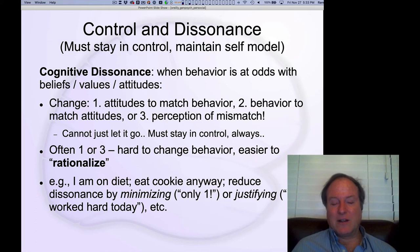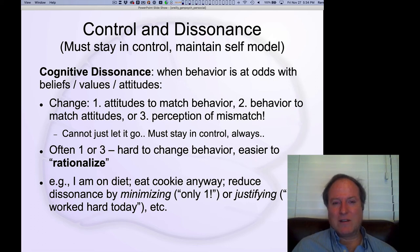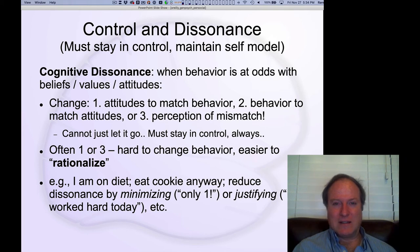For example, you eat a cookie even though you're on a diet, and you minimize the discrepancy by saying, 'I just had one cookie, it doesn't really matter,' or justify it by saying, 'I worked really hard today, so I deserve it.' These are all different ways of making sense of your behavior, whereas you're probably just being impulsive because cookies taste good and your body wants it. This is the overall phenomenology of cognitive dissonance — trying to make sense of how we're behaving and maintain a consistent internal model.